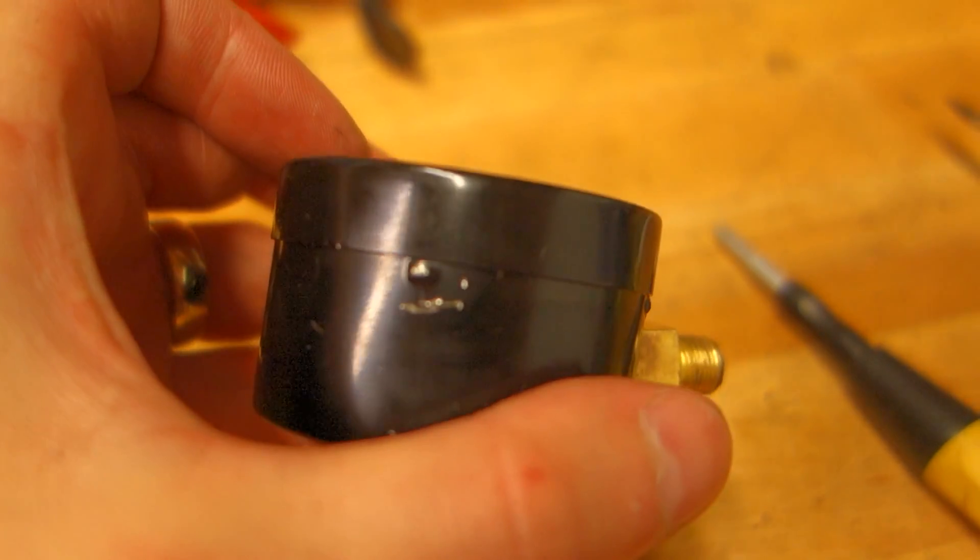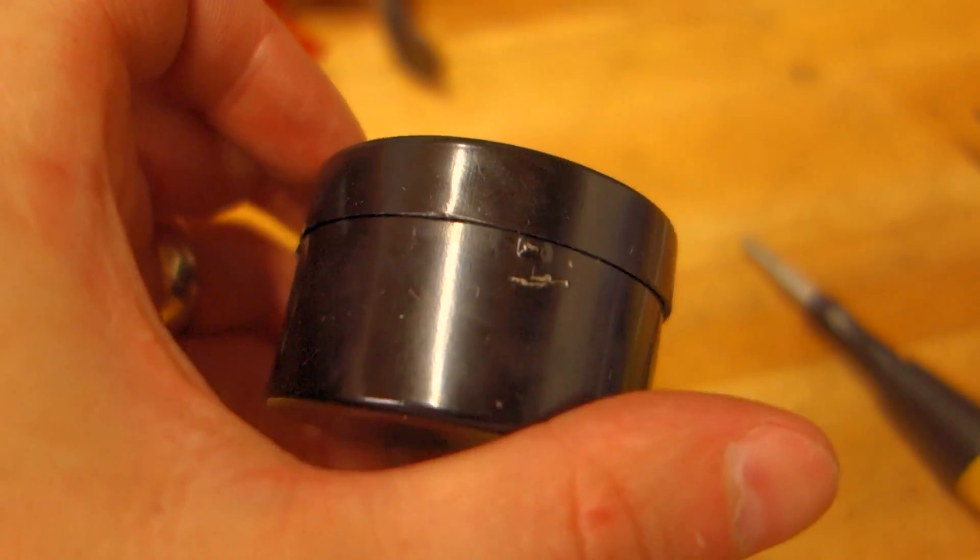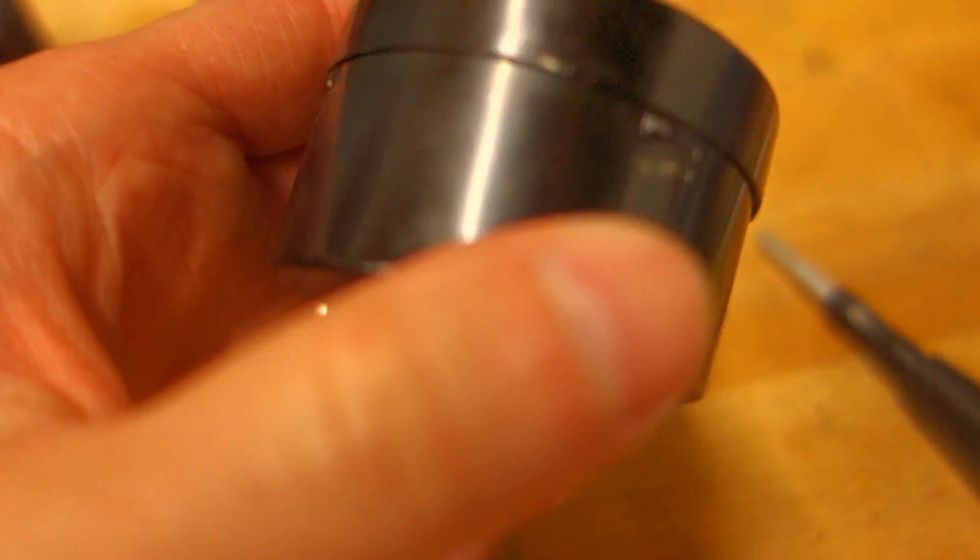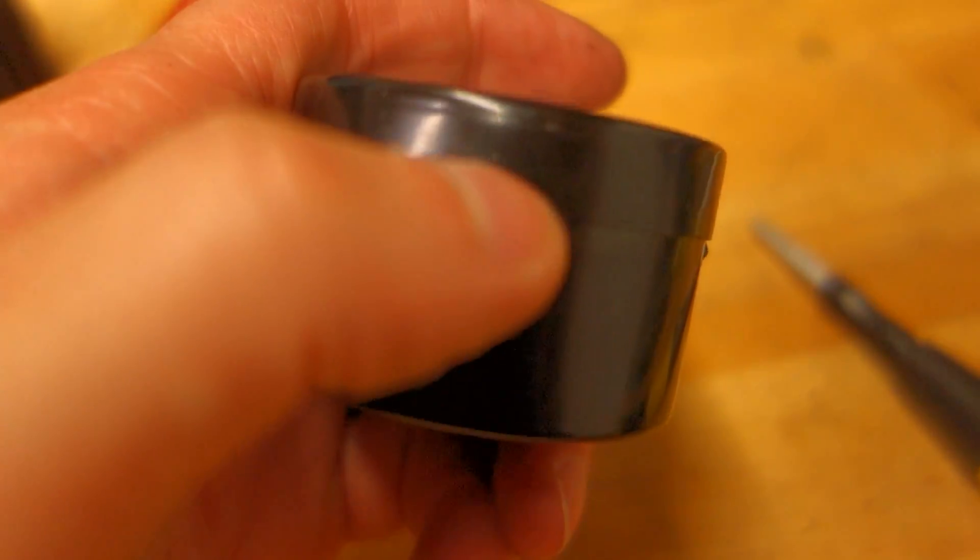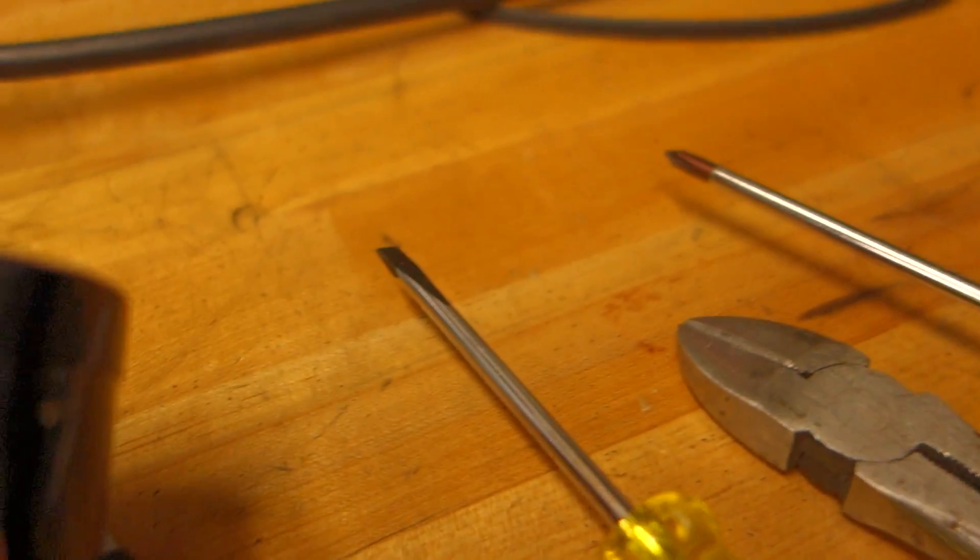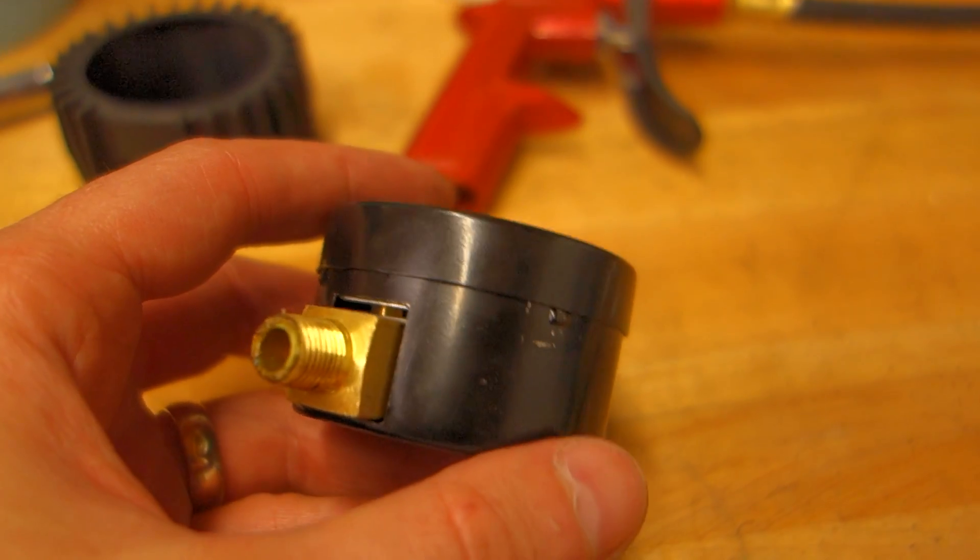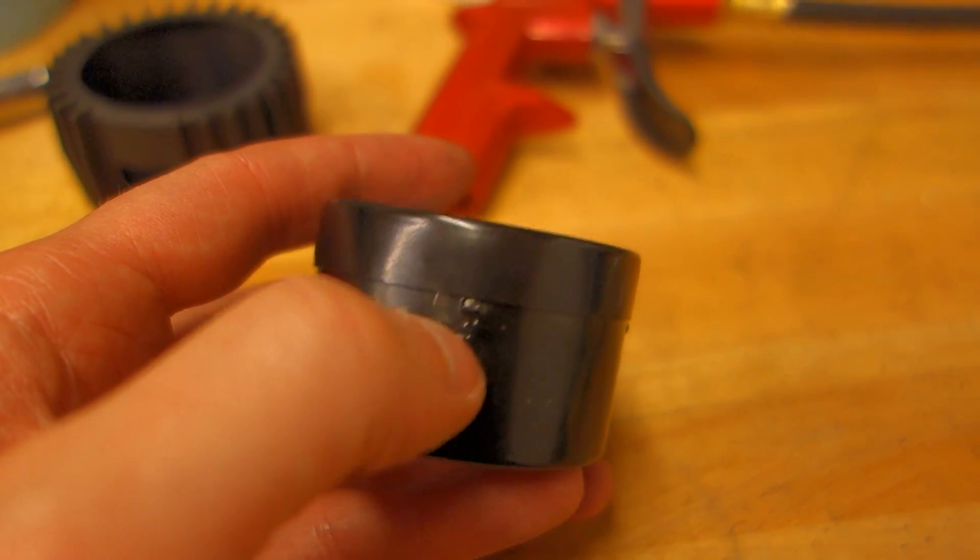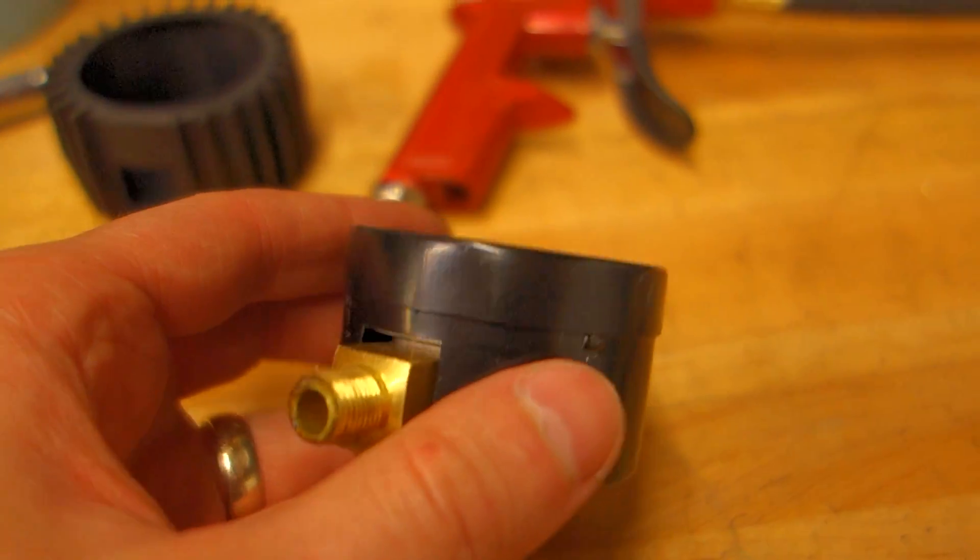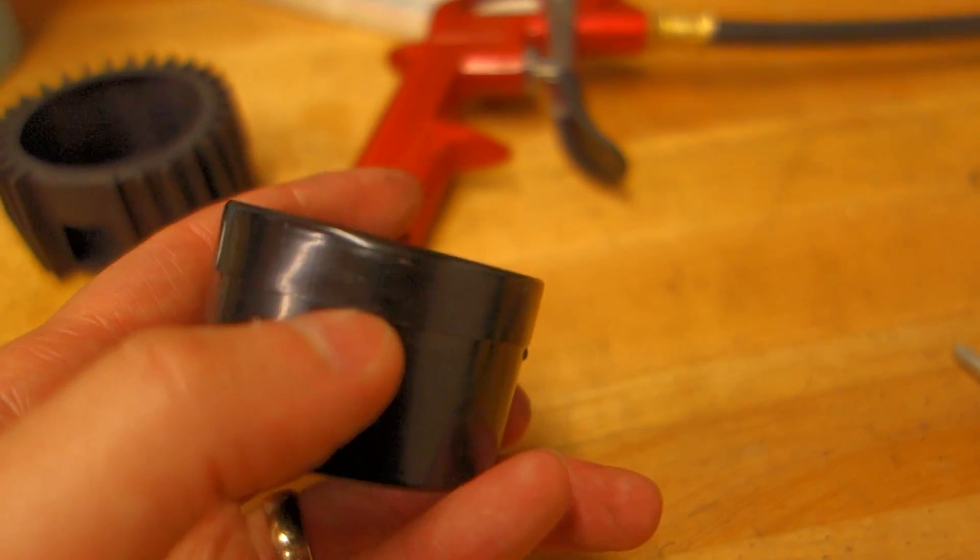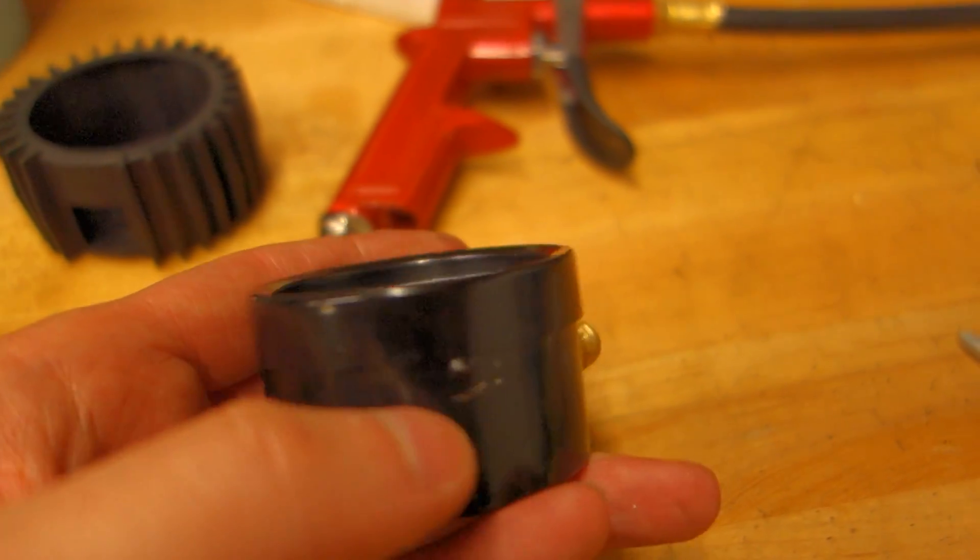This cheap gauge just has kind of a pressure fit bezel with these little nubs going around the side. I just took a thin flat head screwdriver to it and slowly pried up along the edge. As you can see I kind of nicked the paint. That's not a big deal. It's going to be under the boot anyway.